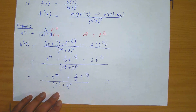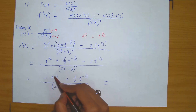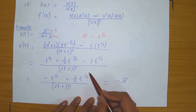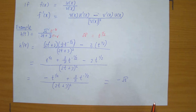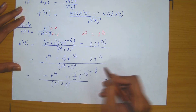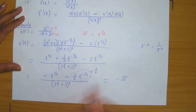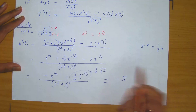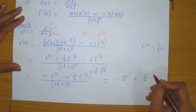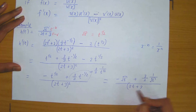Now I'll rewrite the exponents back into square root form. Minus t to the power of one half is simply minus root t. For the second term, which has a negative exponent, I rewrite using x to the negative n equals 1 over x to the n: t to the minus one half becomes 1 over t to the power of one half, which is 1 over root t. So this term becomes plus 3 over 2 times 1 over root t, all divided by 2t plus 3 all squared.